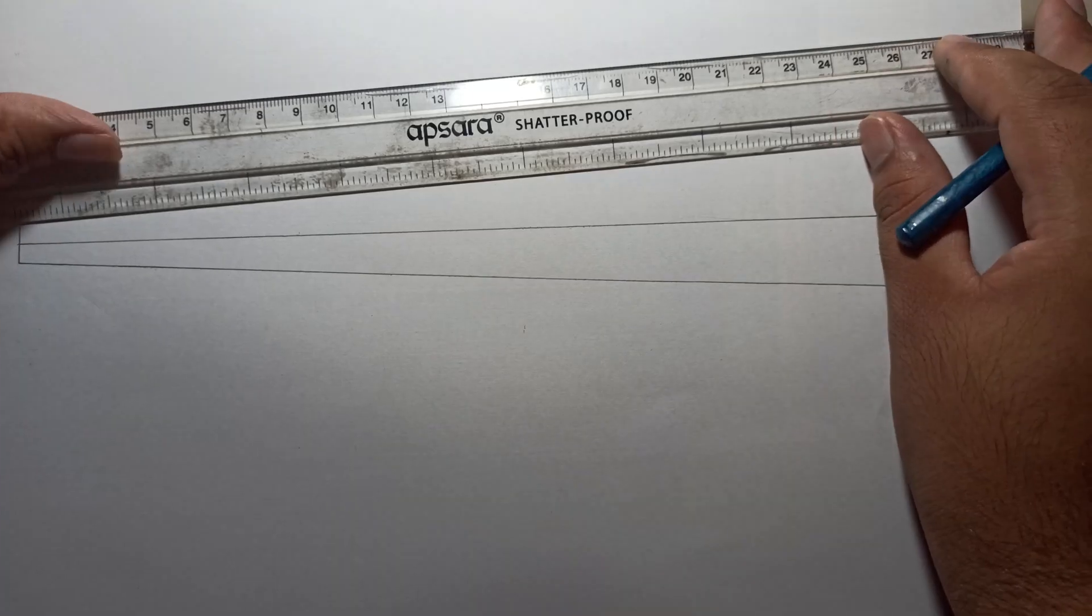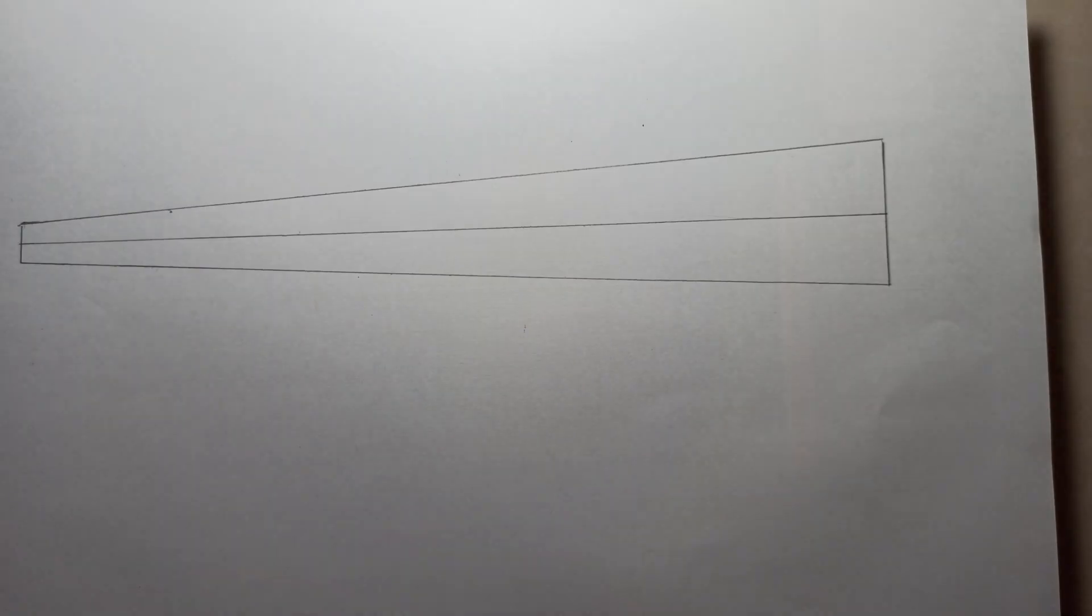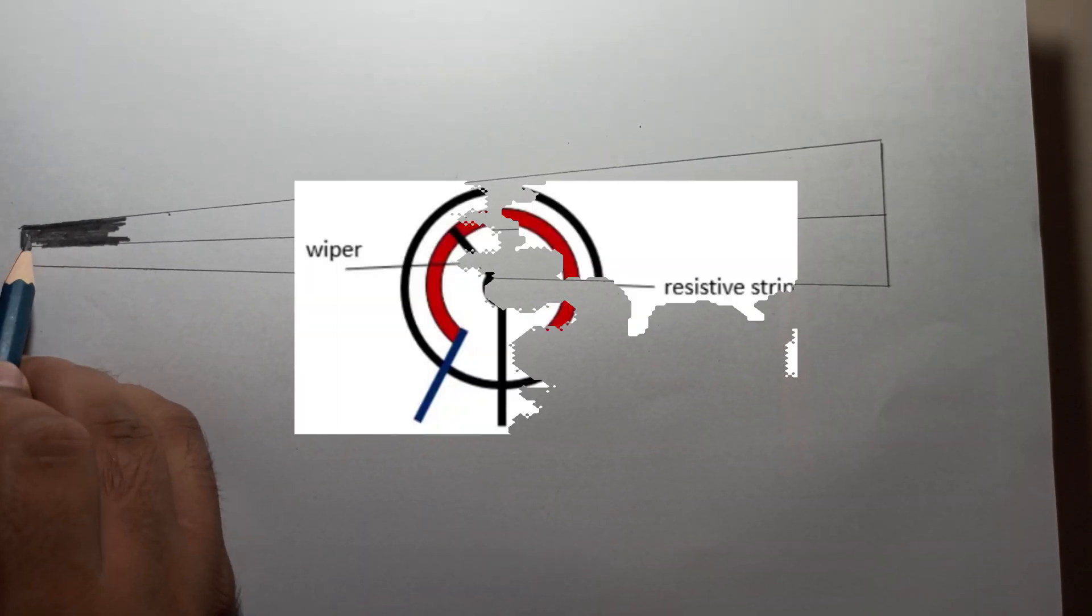But what about log pots where the resistance varies in logarithmic fashion with the movement of the wiper?